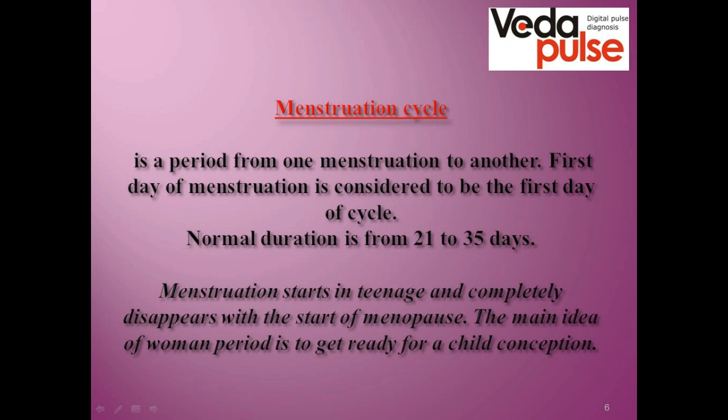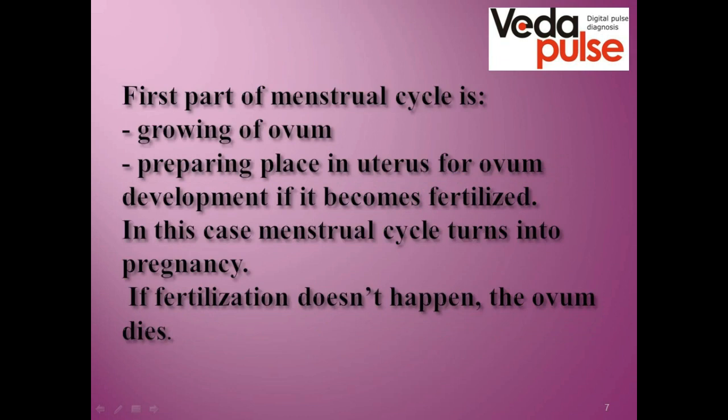The main function of the menstrual period is to prepare the body for child conception, bearing, and labor. If we take the whole cycle of approximately 28 days and split it into two parts, the first part runs from day one to day 14. Its function is ovum maturation and preparation for possible pregnancy. At the same time, changes occur in the inner layer of the uterus so the ovum can implant. If the egg cell gets fertilized, it implants in the uterus and cyclicity stops, and pregnancy starts with hormones working toward saving the pregnancy. Egg cell viability is around three days, and if there is no fertilization, the cell dies.